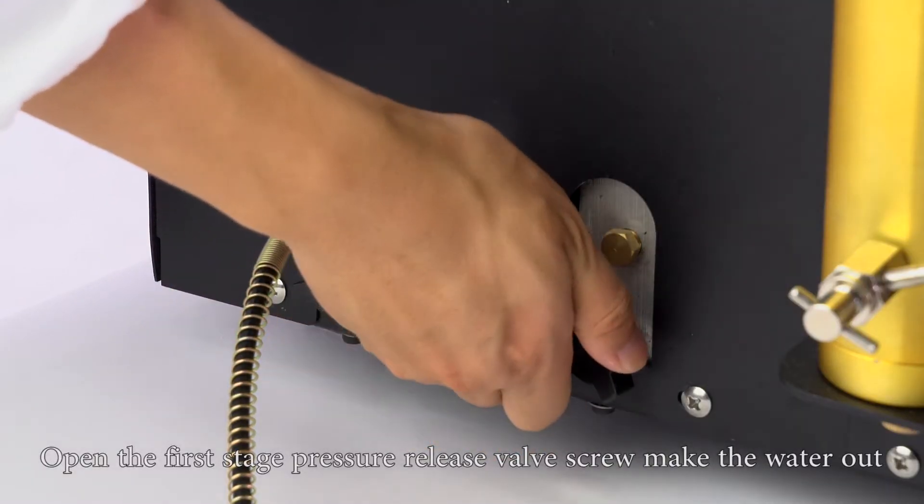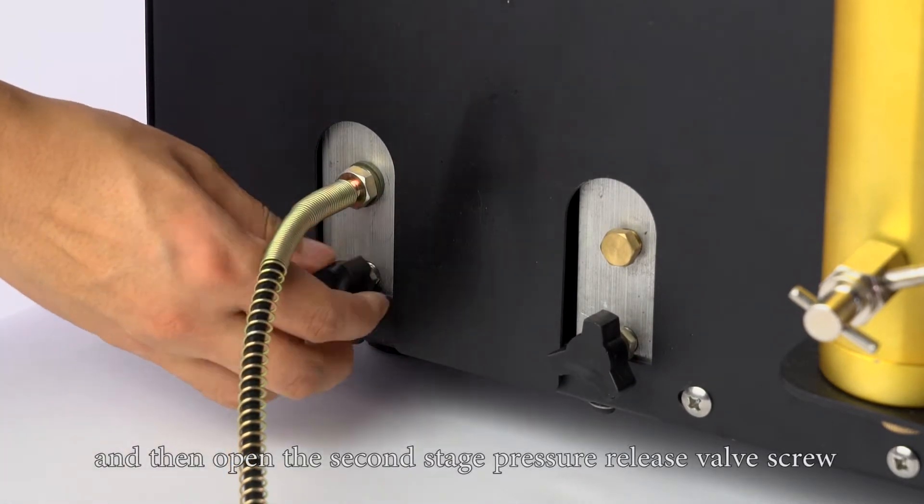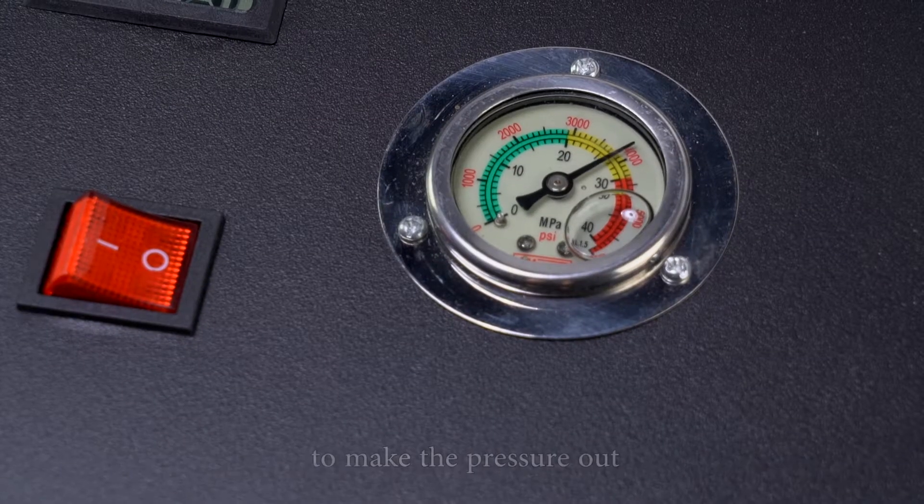Open the first stage pressure release valve screw, make the water out. And then open the second stage pressure release valve screw to make the pressure out.